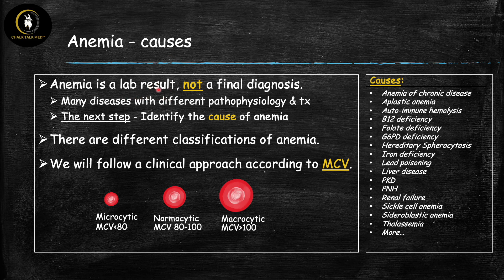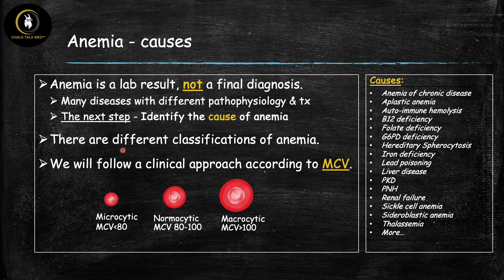Anemia is simply a lab result — it is not a final diagnosis. You can't just tell a patient they have anemia and stop there. You have to figure out what causes it, because there are many different pathophysiologies and vastly different treatments. Some of the common causes are listed here. You have to take the next step, identify which one is the cause, provide the appropriate treatment, and hopefully address the anemia. To work through such a large differential diagnosis we need to use a diagnostic algorithm, and the most commonly used clinical approach uses something known as the MCV.